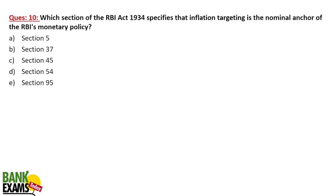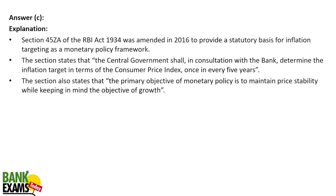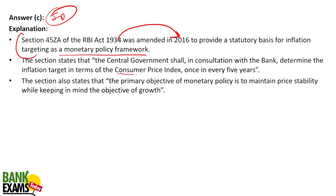Which section of the RBI Act 1934 specifies the inflation target as the nominal anchor of RBI's monetary policy? As per Section 45 subsection ZA — this is a very important question repeated multiple times. The RBI Act 1934 was amended in 2016 to provide a statutory basis for inflation targeting as the monetary policy framework. This section states that the Central Government shall, in consultation with the bank, determine the inflation target in terms of the Consumer Price Index once every 5 years.